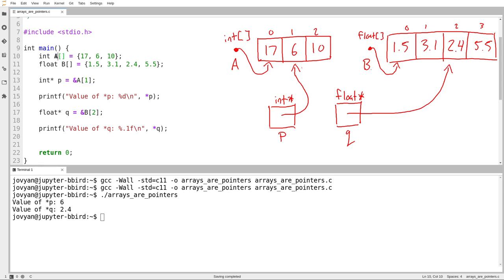On the other hand, I don't have to do that. It turns out that the name A is just this arrow. And if I want an arrow pointing at A sub 1, well, what I want to do really is start here and then move ahead by one step.